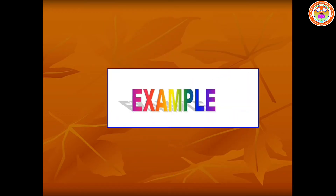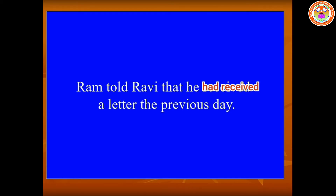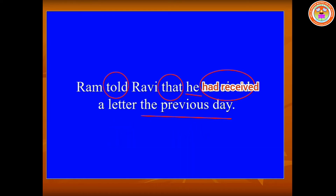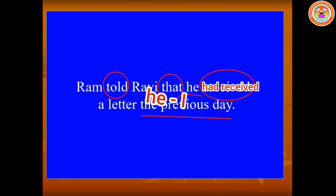Let's learn through examples. Number one: 'Ram told Ravi that he had received a letter the previous day.' In this sentence the conjunction word is 'that' and the reporting verb is 'told', so we can understand this is a declarative sentence. For that, we have to change 'told' into 'said to' and we have to remove the conjunction word 'that'. Instead we have to add a comma and quotation mark.